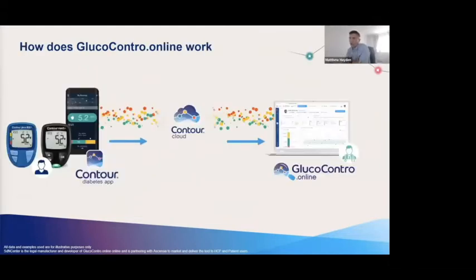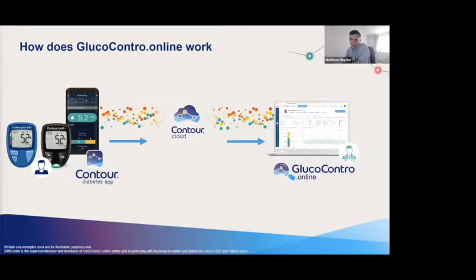GlucoContro Online works using a secure cloud solution which you access after you've created an account and created or joined a clinic. You can then connect with your patients and after they approve to share their data with the clinic you can access their blood glucose readings straight away. To make this as simple as possible we recommend patients use a connected Contour meter and the Contour diabetes app — that way when they do a blood glucose reading the value automatically transfers to the app, which then automatically syncs with GlucoContro Online via the cloud, requiring no additional steps for the patient.